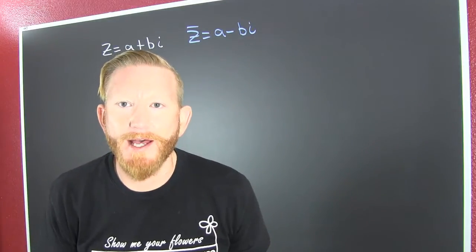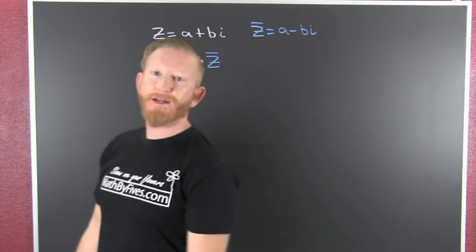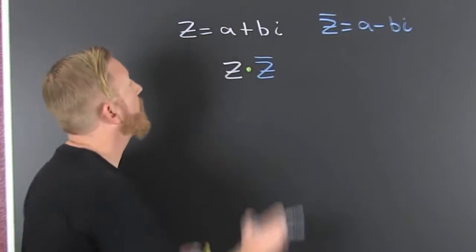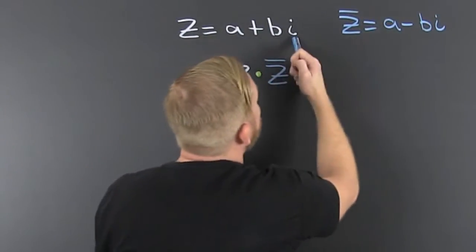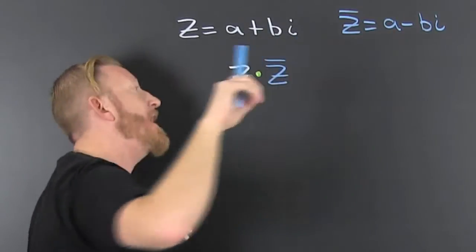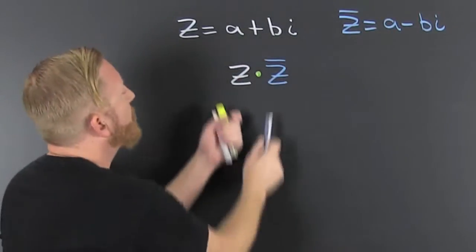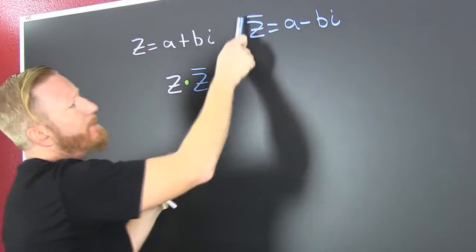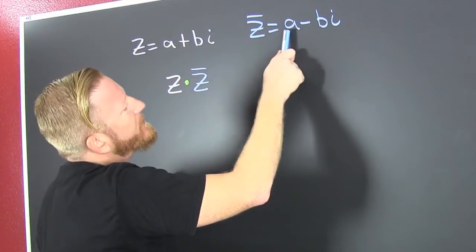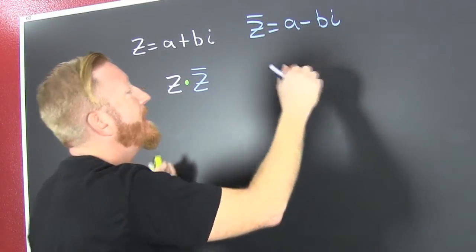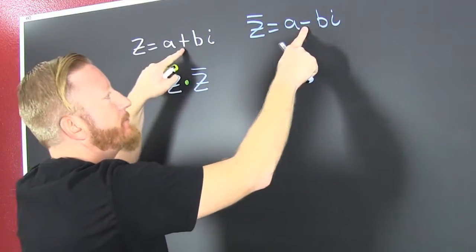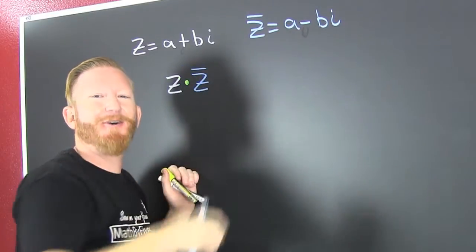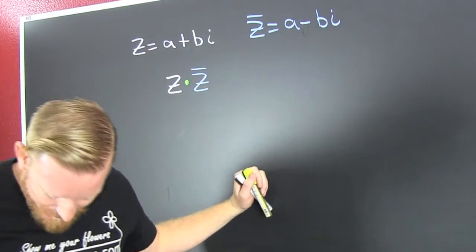It's complex. What we're going to do is take a complex number a plus bi in its general form and we're going to multiply it by its complement z bar. The complement is equal to a minus bi, it's the opposite sign in between.